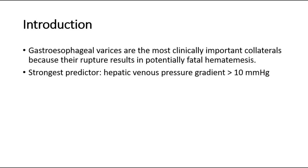The strongest predictor for the development of varices in patients with liver cirrhosis is the hepatic venous pressure gradient. If it is more than 10 mmHg, there is a high risk for development of esophageal varices. The normal hepatic venous pressure gradient is around 1 to 5 mmHg, and portal hypertension is defined as a pressure gradient greater than 5. So if it is more than 10, there is a high risk of varices formation.